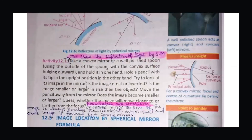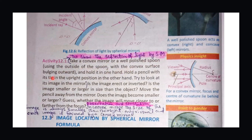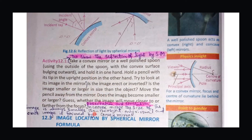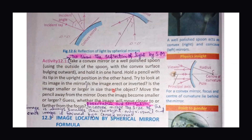For an activity, let's take a well-polished spoon, with the outside bulging outward as a convex surface. Hold it straight in front of a pencil and observe how the image appears — whether it is erect, inverted, small, or large. The result is that the image is erect and virtual, and the size of the image is small compared to the size of the object. This is a simple activity to show the properties of the convex mirror.